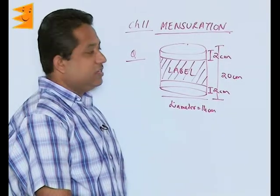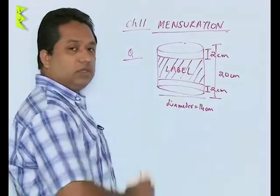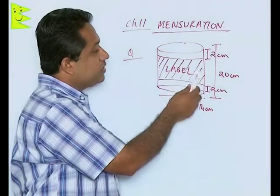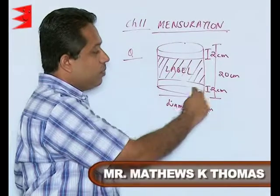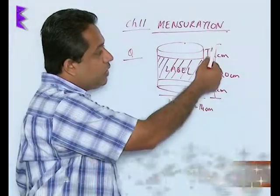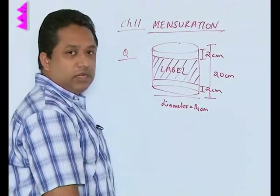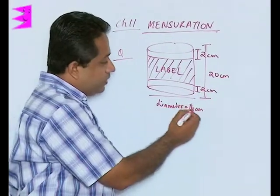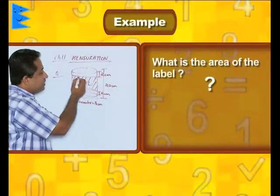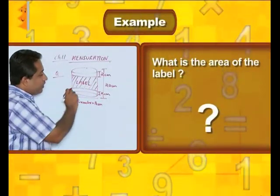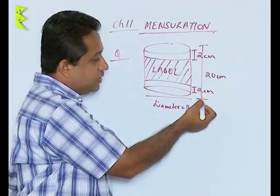In the next question, we see a cylindrical vessel on which a label is put. The label is put in such a way that there are 2 centimeter gaps from the top and bottom. The total length of this cylindrical vessel is 20 centimeters and the diameter is given as 14 centimeters. The question is: what is the area of this label?